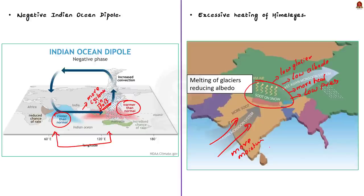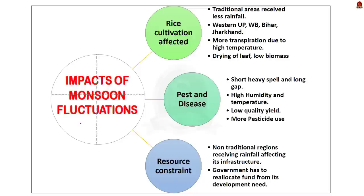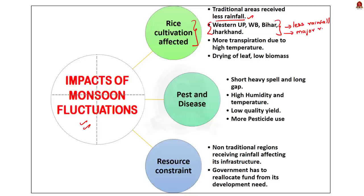Now let us see the impacts of climate change-induced monsoon fluctuations. The first major impact is on rice cultivation. Areas that traditionally received good rainfall received less rainfall this year — specifically Bihar, West Bengal, Jharkhand and eastern Uttar Pradesh, which are the major rice-producing regions of our country, accounting for one-third of production.